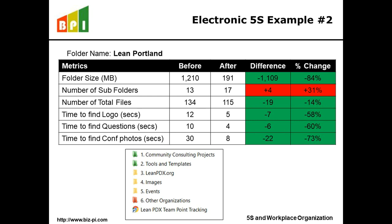In another example, I cut the space down 84%, added a few more folders, and cut out about 15% of the files. I did a quick timing study to see how long it would take to find certain files before and after. Before it took 12 seconds to find a file; after, I got it down to 5 seconds. A list of questions took 10 seconds before, down to 4. Finding photos from a conference took 30 seconds before, and I got it to 8 seconds. Over a week, month, or year, that adds up to quite a bit of savings.